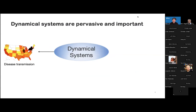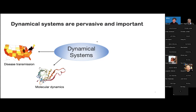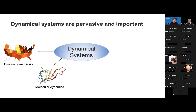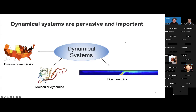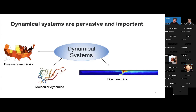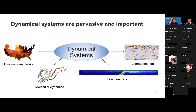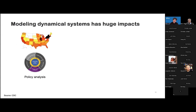For example, if we want to track the trend of disease transmission, it can be considered as a dynamical system. If we want to understand the dynamics of proteins, we need to conduct molecular dynamical simulation. Also, dynamical systems can be used to understand fluid dynamics or phylodynamics. Lastly, climate change and winds all around the world can also be considered as a dynamical system. Modeling dynamical systems can have huge impact.